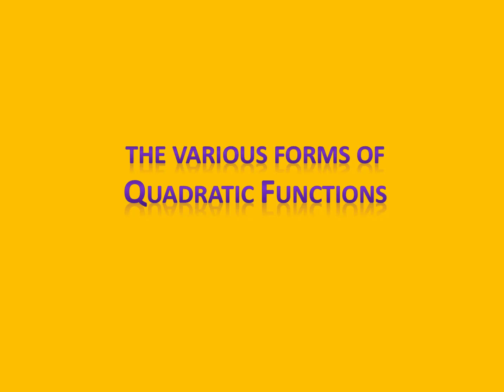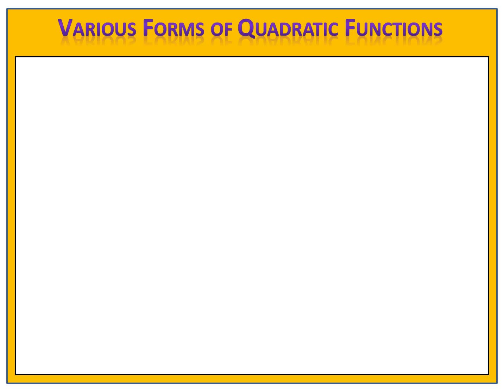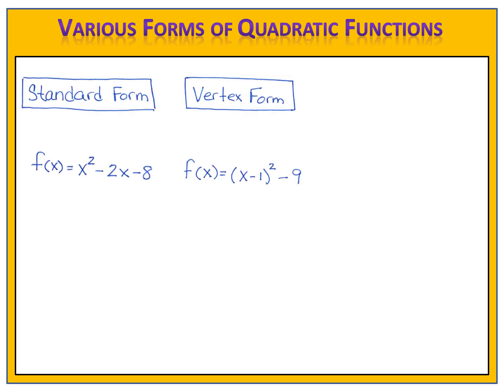In this lesson, we're going to explore the various forms of a quadratic function and look at the types of information that each one reveals. At this point, we've discussed three different ways that you can write quadratic functions: standard form, vertex form, and factored form.